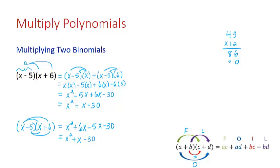1 times 3 is 3, 1 times 4 is 4. So when we multiply two two-digit numbers, we're really doing the FOIL method or multiplying two binomials together.